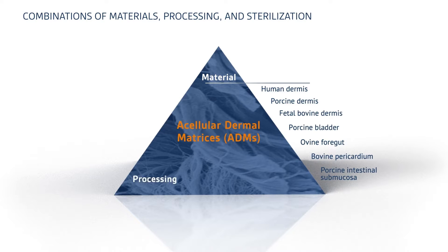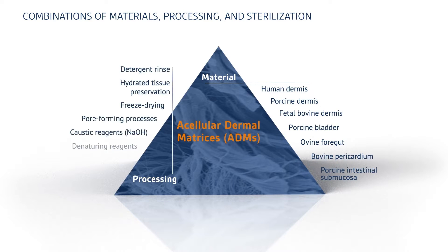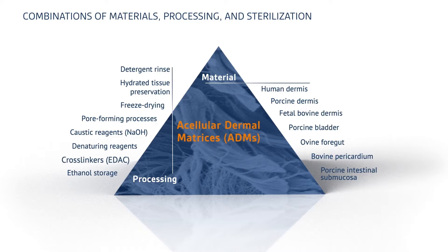A variety of processes can be used to decellularize and preserve the ECM. Some of these methods, such as the use of caustic or denaturing reagents, cross-linkers, and ethanol storage, can harm the structural and biochemical integrity of the matrix.